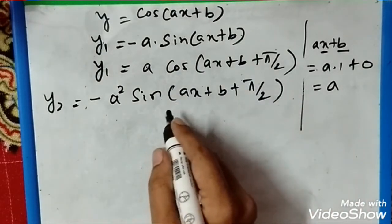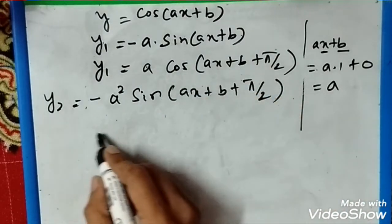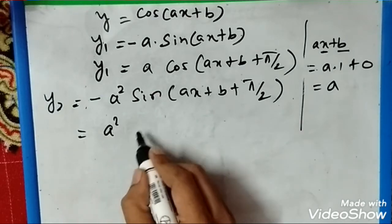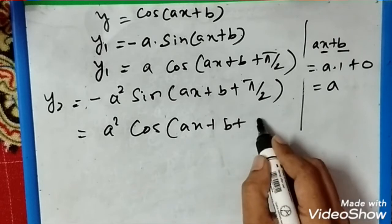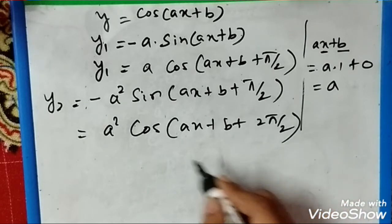Again we take the same trigonometric identity to make it cos. So it becomes y2 = a² cos(ax + b + 2π/2). Like this, if you go on differentiating to the nth term...